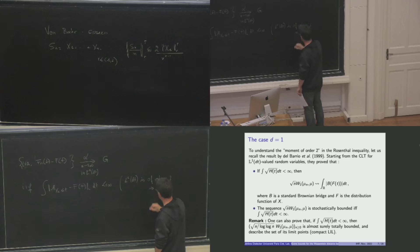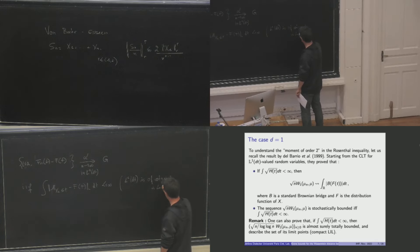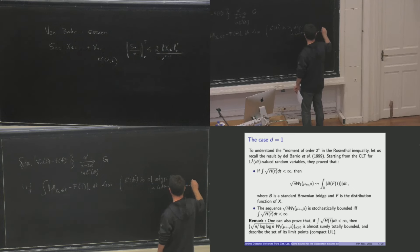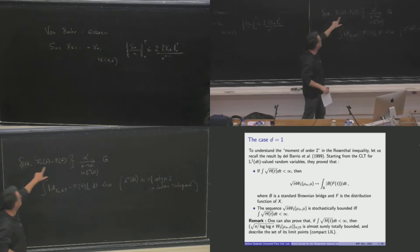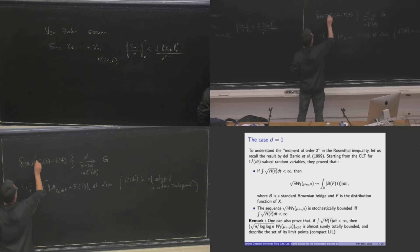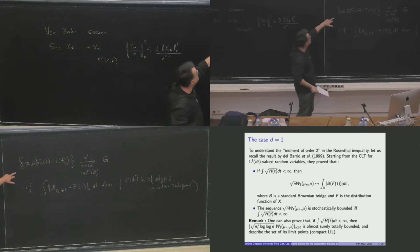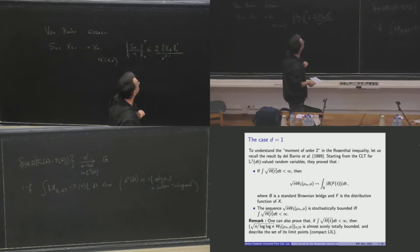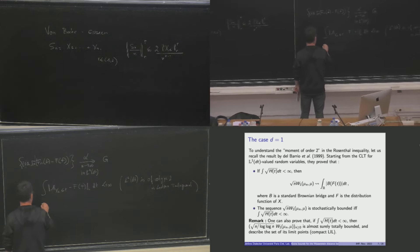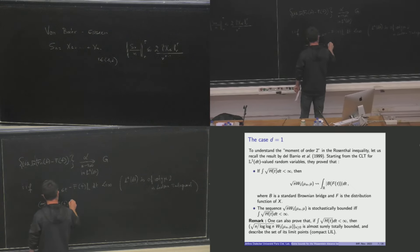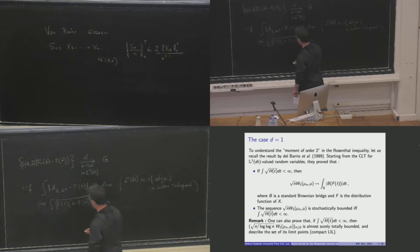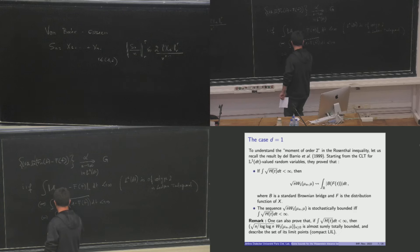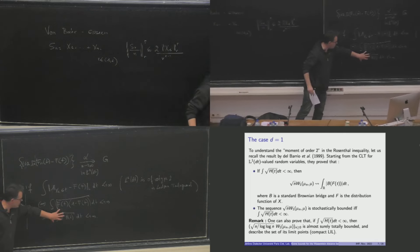This comes from the fact that the space L1(dT) is of cotype 2. You can find this in the book by Ledoux and Talagrand. So this is a necessary condition to get the central limit theorem in L1. Once you get the central limit theorem in L1, then you can deduce the central limit theorem for W1, and this is equivalent to this condition with the square root, which is also equivalent to this other condition.